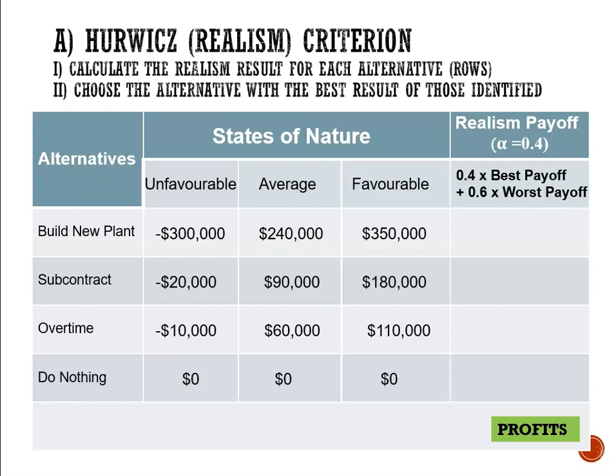For building a new plant, we're going to have 0.4 multiplied by the best result, which is 350,000 — the highest profit — plus 0.6 multiplied by the worst outcome, which is negative 300,000. So 0.4 multiplied by 350,000 plus 0.6 multiplied by negative 300,000, and that gives us negative 40,000.